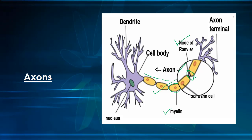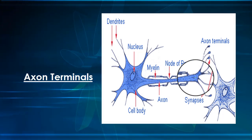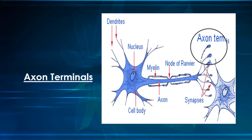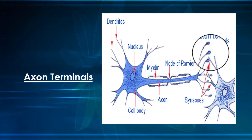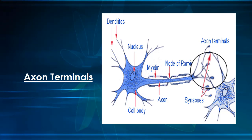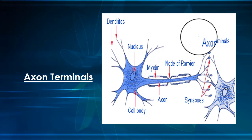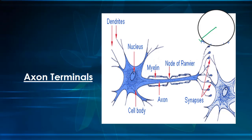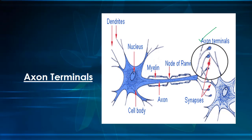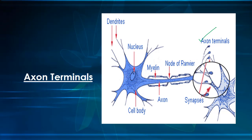The axon terminal is the most distal part of the axon. It is from here that the neuron sends chemical signals to other cells, usually via neurotransmitters — for example, dopamine. To facilitate the secretion of neurotransmitters, the axon terminals contain a large number of mitochondria.